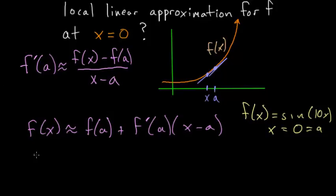So we can say that f(x) is approximately the function evaluated at 0, and the sine of 0 is 0. So this would just be 0 plus the derivative of the function evaluated at 0 times x minus 0, or just x. So we need to figure out the derivative of this function.